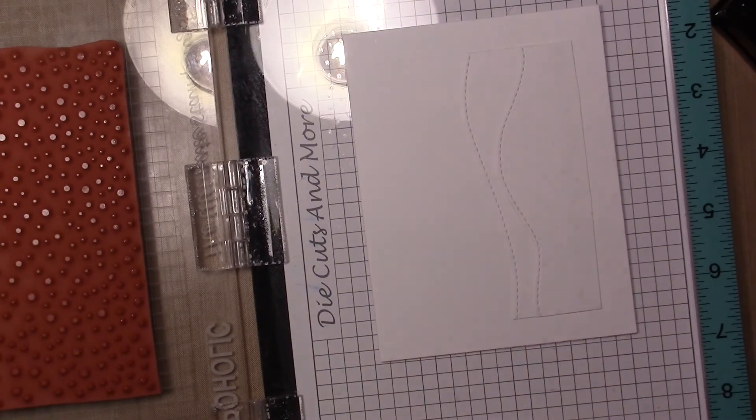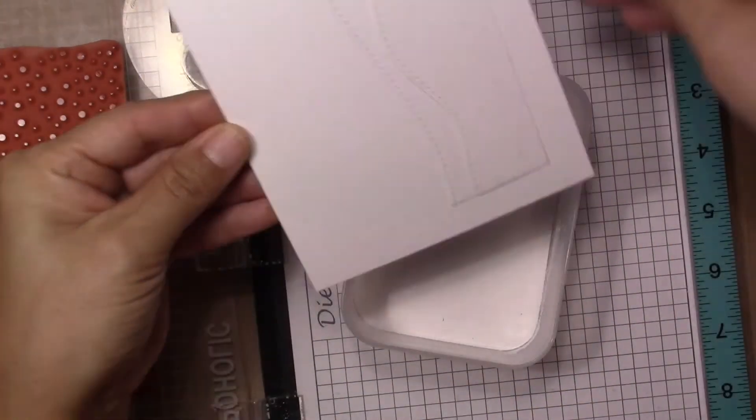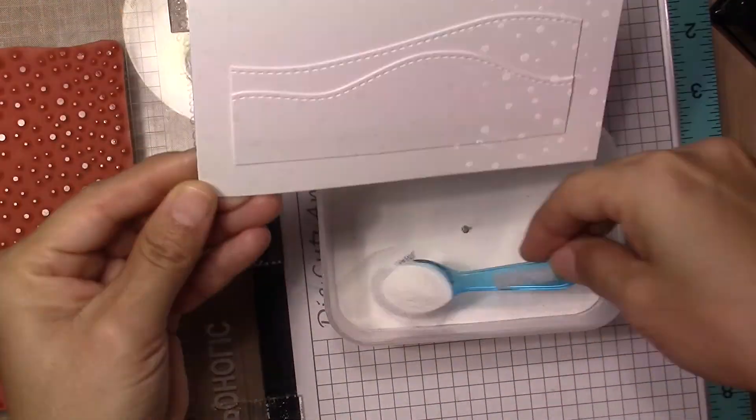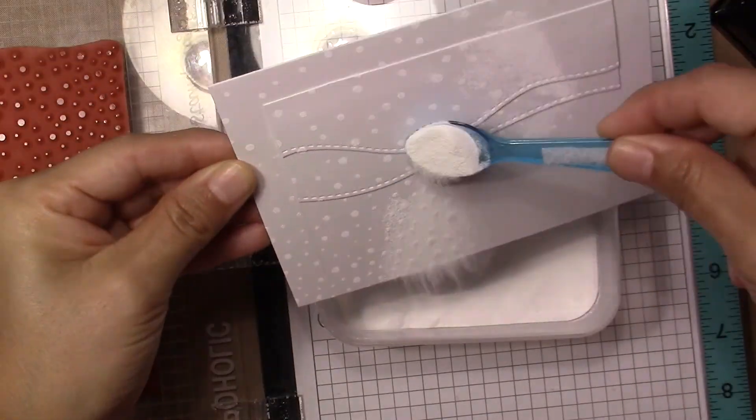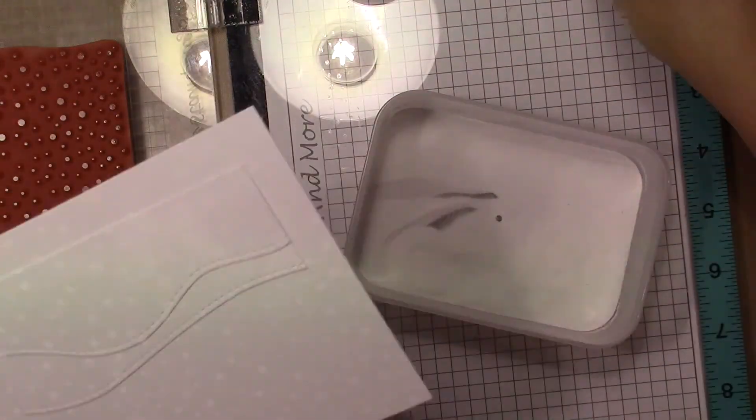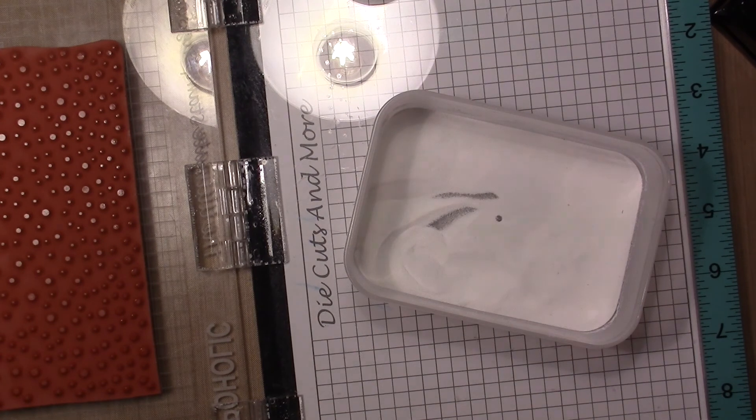I'm going to stamp the top of this with MFT Falling Snow stamp. This is a big stamp. I'm going to stamp it with Versamark and apply white embossing powder.